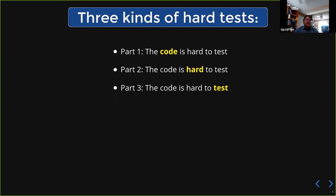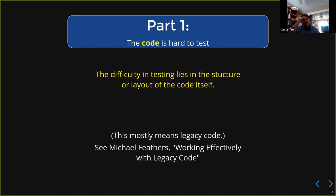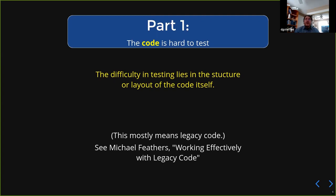Let's start with part one: the code itself is hard to test — the code just isn't cooperating and you can't test it easily or at all. This really is kind of legacy code. Legacy code is the big obvious poster child for this: you've got code that's 20 years old, it doesn't have any unit tests, you're trying to figure out how to unit test it, and you just can't.